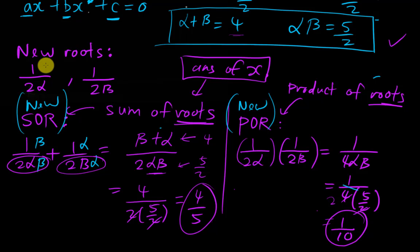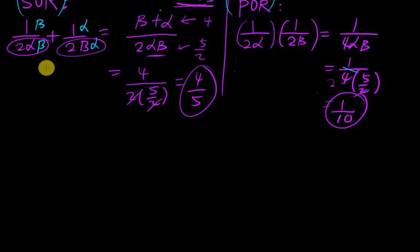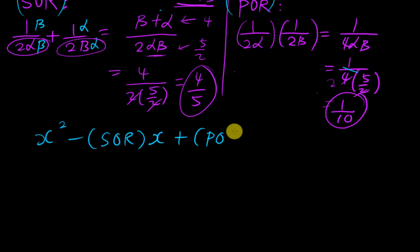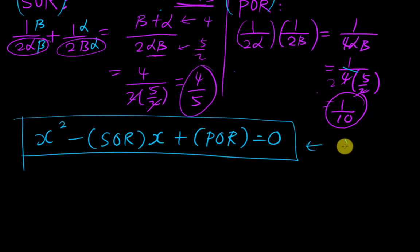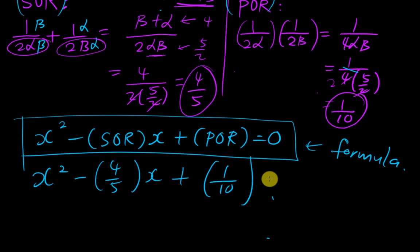Now I have the new sum of roots and new product of roots. I substitute them into the general quadratic formula: x² minus (sum of roots)x plus (product of roots) equals zero. This formula you must memorize for this topic, especially whenever you see alpha-beta questions. So: x² minus (negative 4 over 5)x plus 1 over 10 equals zero.